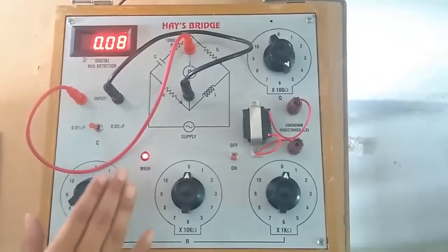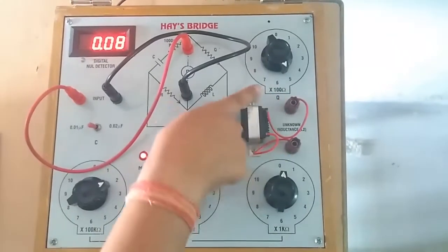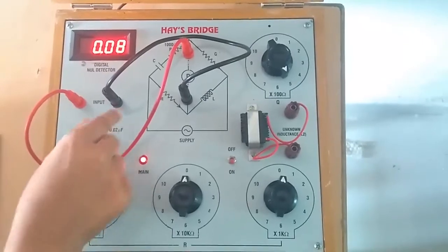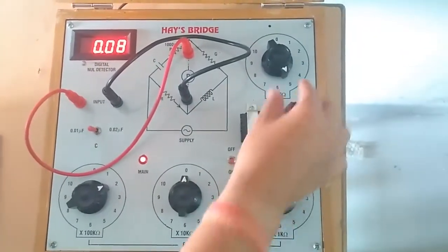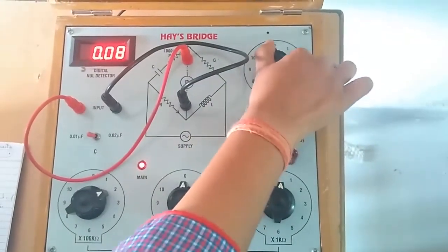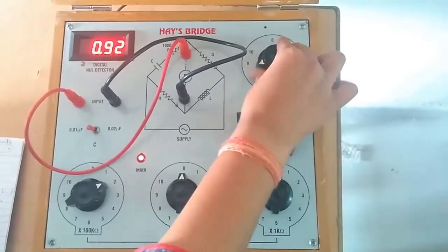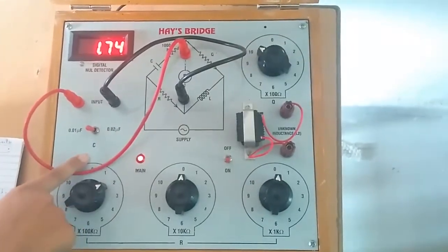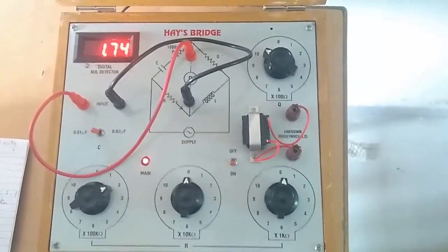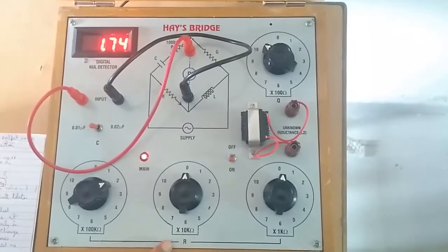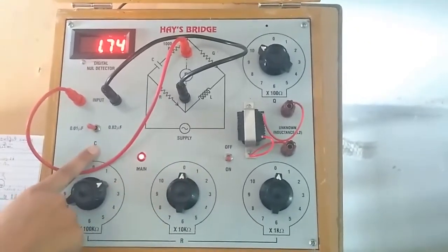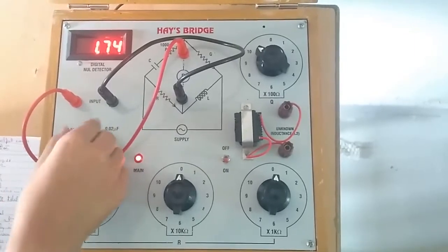Similarly, repeat this process with Q fixed at 500 Ohm and capacitance at 0.02 microfarad. Then repeat this process for Q at 1000 Ohm, setting the dial at 1000 Ohm and capacitance at 0.01 microfarad, and check the value of the digital null detector for minimum. Similarly, we can calculate for capacitance at 0.02 microfarad.